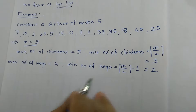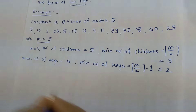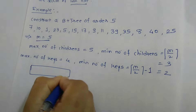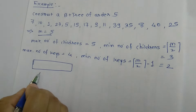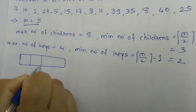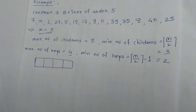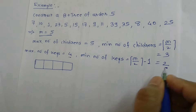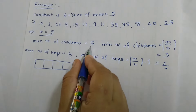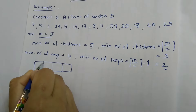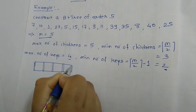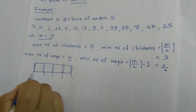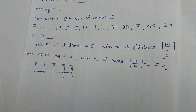For maximum number of keys, how to draw the B plus tree — how many keys can I store here? 1, 2, 3 and 4, because the maximum number of keys is 4 and the minimum number of keys is 2. The maximum number of children is 5 because these are the pointers, and the pointers will point to the next children: 1, 2, 3, 4 and 5.